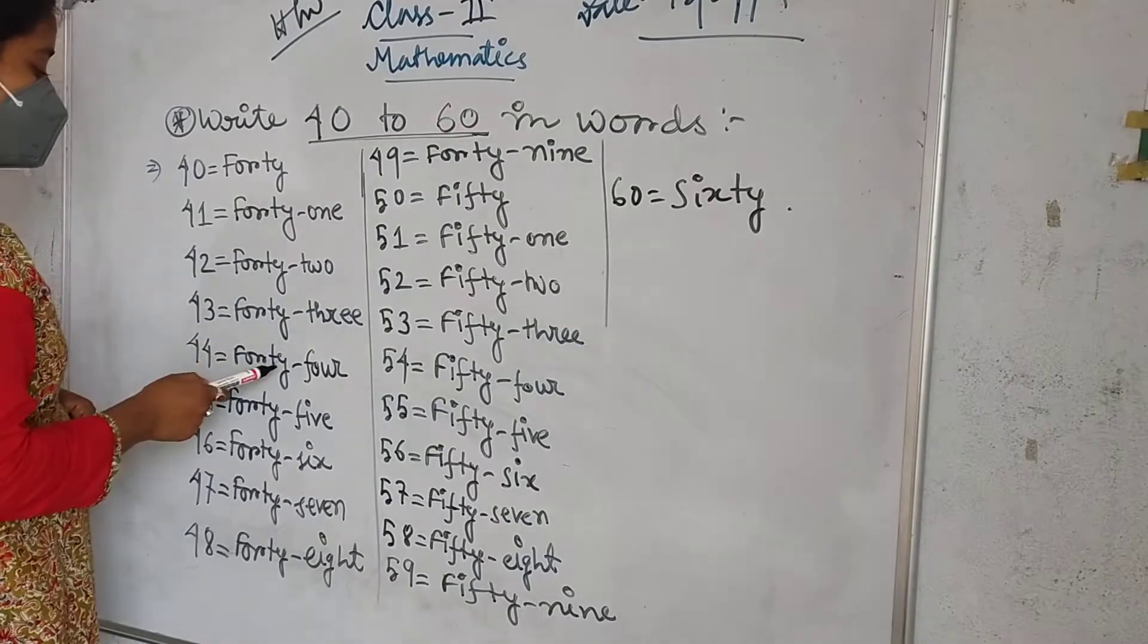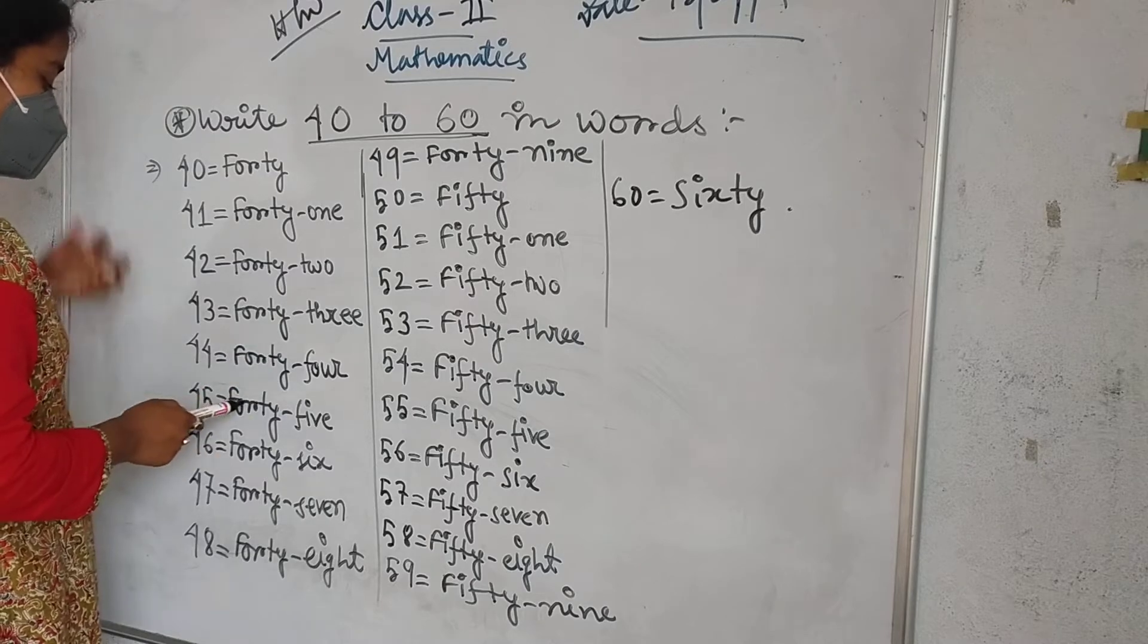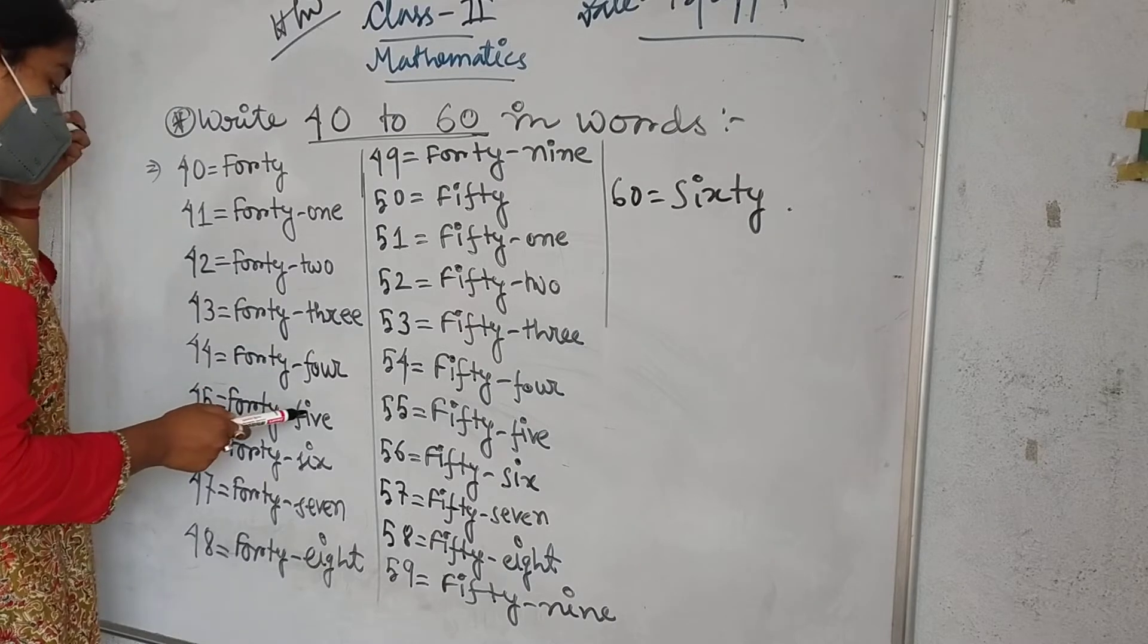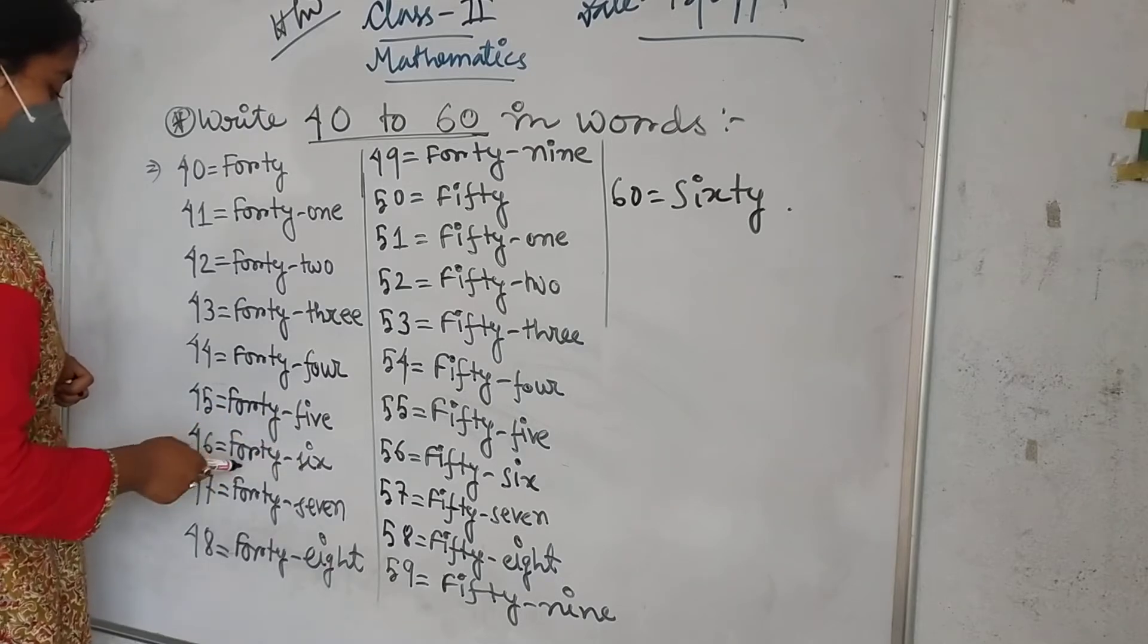Then 44: F-O-R-T-Y, forty, F-O-U-R, four, forty-four. Then 45: F-O-R-T-Y, forty, F-I-V-E, five, forty-five. Then 46: F-O-R-T-Y, forty, S-I-X, six, forty-six.